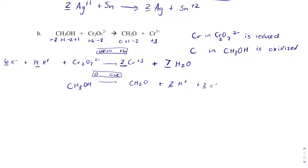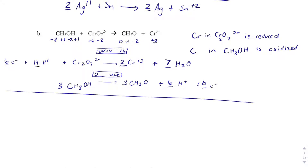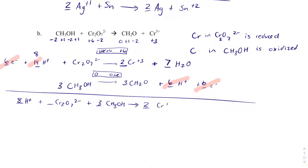Now I add up the reactions. Electrons must cancel, so I multiply the carbon half reaction by 3 — coefficients become 3 methanol, 6 H⁺, 3 CH₂O, and 6 electrons. Adding the reactions: the 6 electrons cancel, and the H⁺ partially cancel — 14 minus 6 gives 8 H⁺. The overall reaction is: 8 H⁺ + Cr₂O₇²⁻ + 3 CH₃OH → 2 Cr³⁺ + 7 H₂O + 3 CH₂O (formaldehyde).